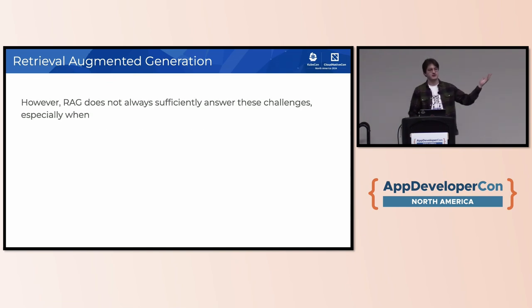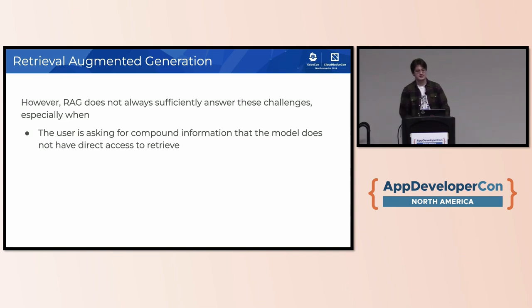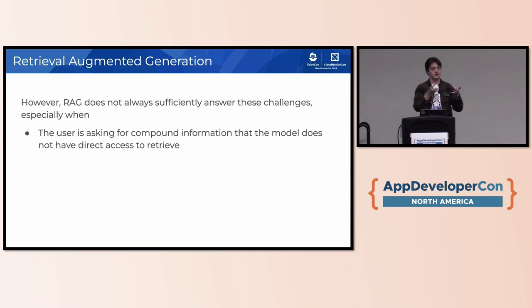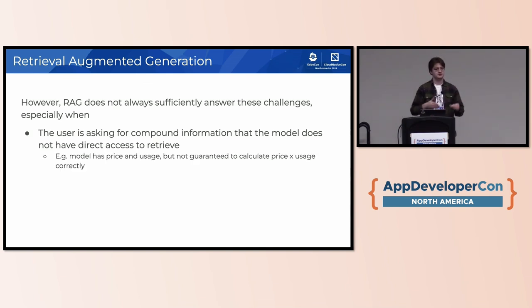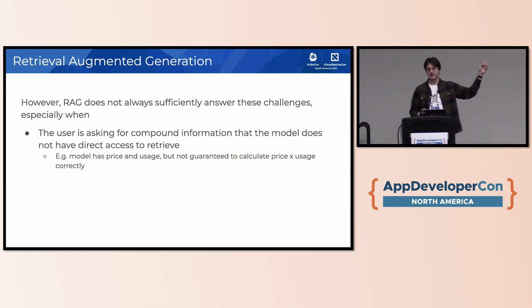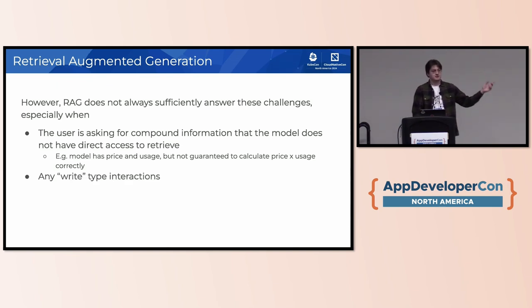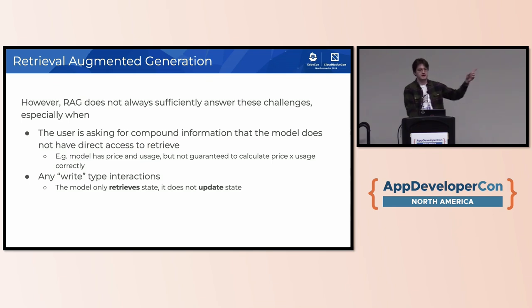Crucially, RAG doesn't solve everything. If the user is asking for compound information — where you retrieve one piece and another separate piece but need to combine them — you're still trusting a statistical model to do that combination correctly. For example, if there's a price per usage and my retrieval tells me how much they're using and what the price is, I still have to trust the language model to do that math correctly. And retrieval augmented generation only retrieves state — it's not updating anything, so write-type interactions are just not covered.